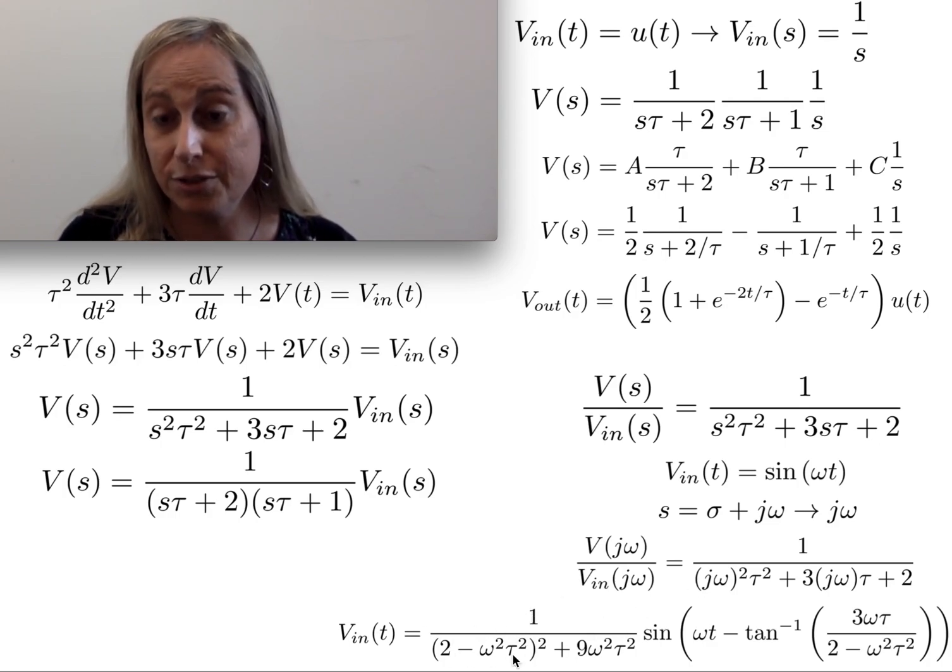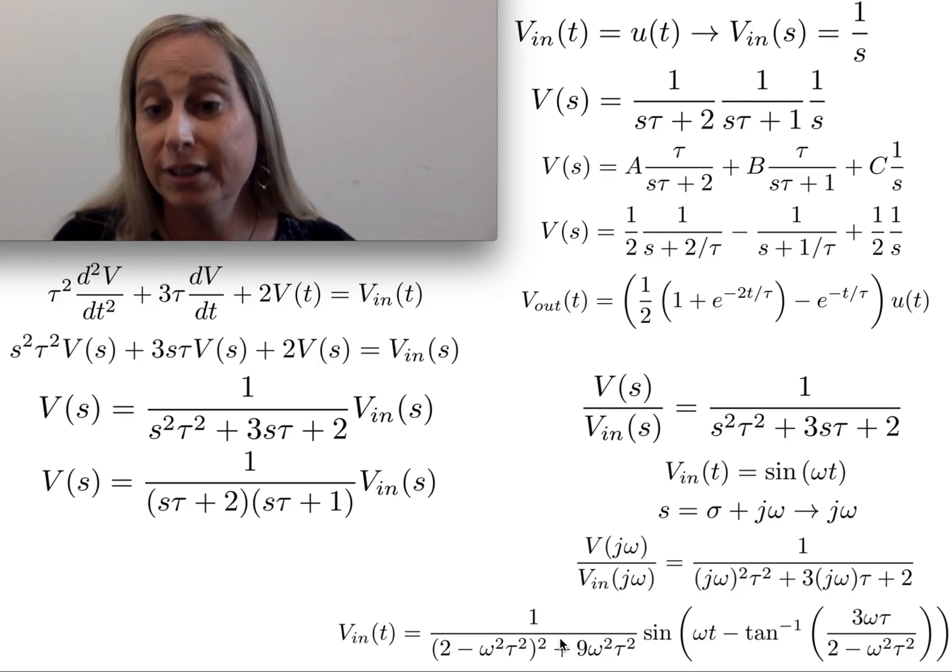And then when I look at the other term, I get the phase term on the other side here, which then gives me this over that remaining term that is squared. And so this gives me a way to kind of look at both magnitude and phase.